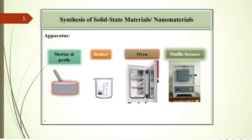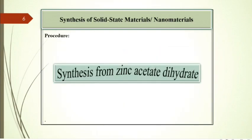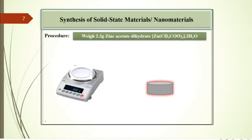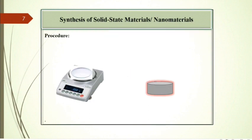Procedure: Synthesis from zinc acetate dihydrate. Weigh 2.2 gram zinc acetate dihydrate and then transfer it in a mortar. Then weigh 1.7 gram oxalic acid, also transfer it in the same mortar and grind with pestle for 15 to 30 minutes. It may form paste.